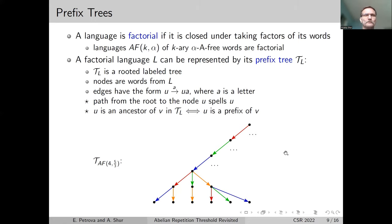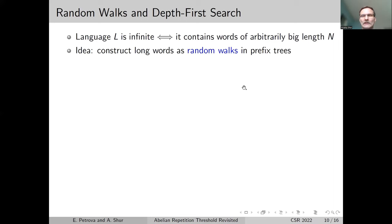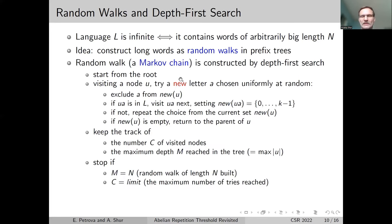This is a prefix tree. Let's note that a language is infinite if and only if it contains words of arbitrarily big lengths. The idea is to construct long words as random walks in prefix trees. A random walk is a sort of Markov chain. We construct it by depth-first search. We start from the root. When we are in some node u, we try appending a new, unused letter to u.